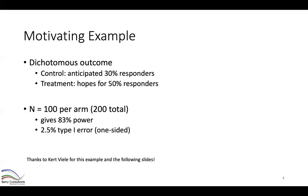Consider a trial where we have a dichotomous outcome — each patient is either a responder or a non-responder. On the control arm we anticipate about a 30% responder rate, and we hope the treatment arm will achieve about 50%, so a 20% absolute benefit. Using our sample size calculator, a sample size of 200 subjects, 100 per arm, gives about 83% power under a two-and-a-half percent one-sided type one error rate.